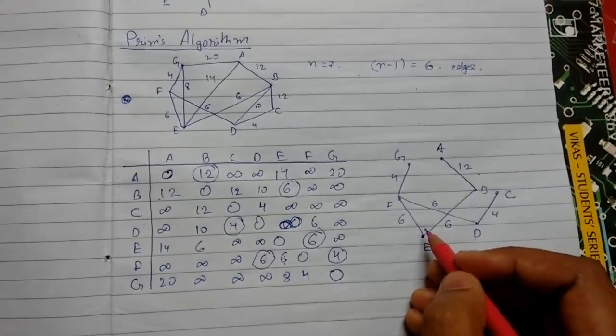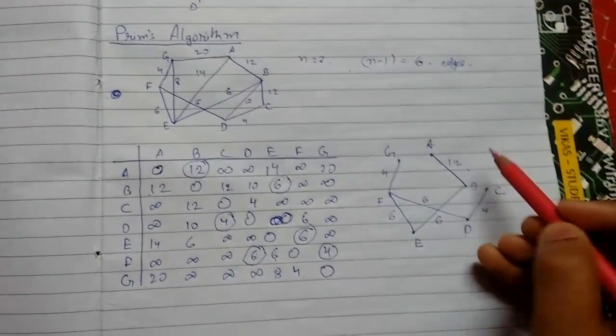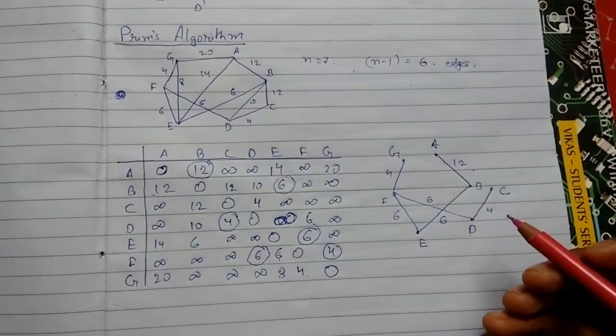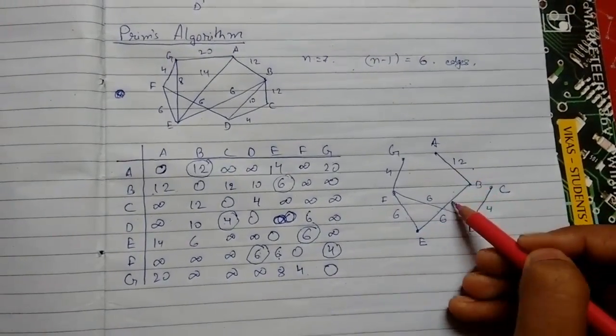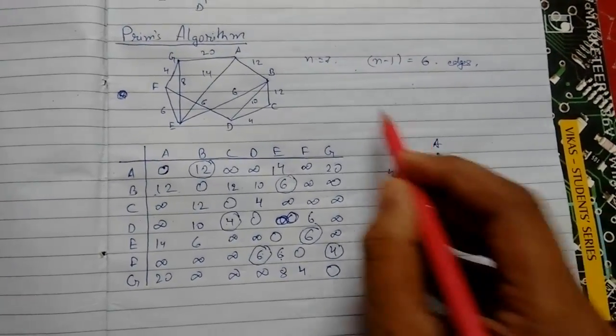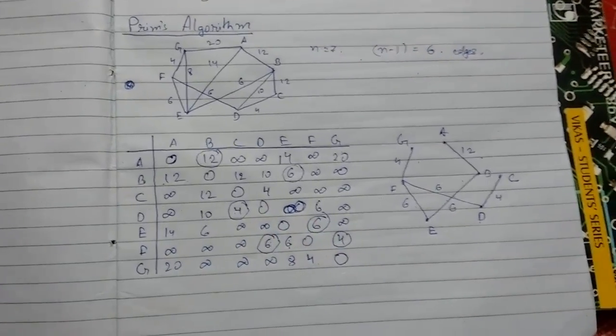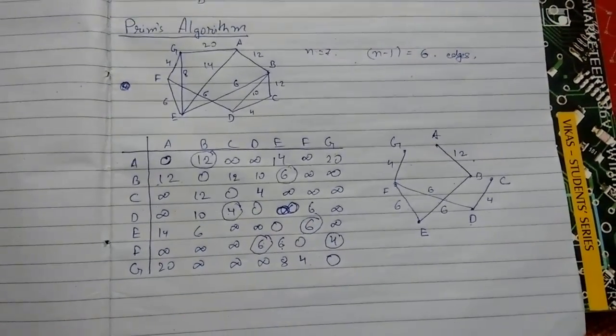So this was all about Prim's algorithm. We have verified it. This is one, two, three, four, five, six edges. Six edges are there, so it has been verified. We have done our spanning tree is correct. Thanks for watching, subscribe to my channel for more videos.